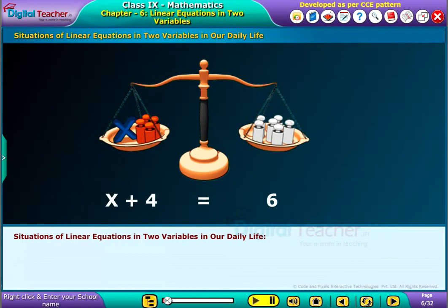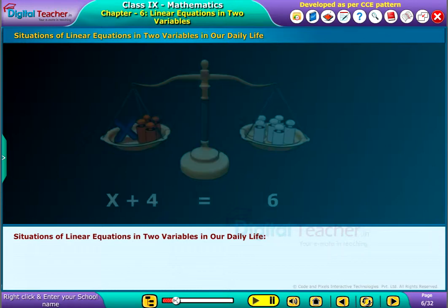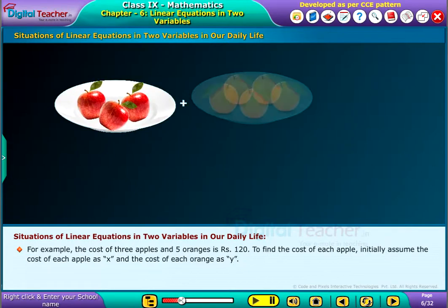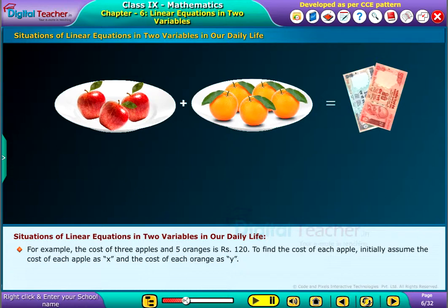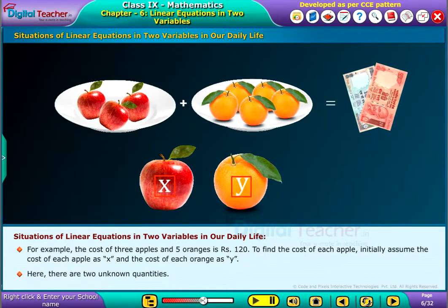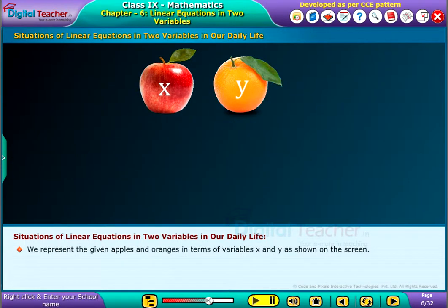Now let us see a real-time situation where linear equations in two variables are used. For example, the cost of three apples and five oranges is 120 rupees. To find the cost of each, we initially assume the cost of each apple as X and the cost of each orange as Y. Here there are two unknown quantities.